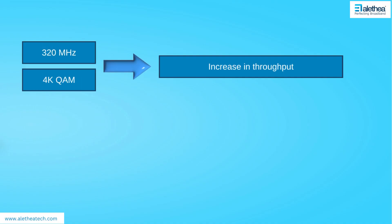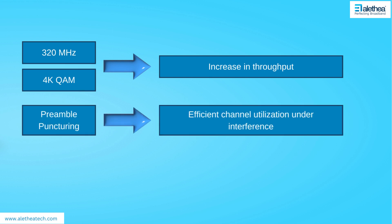Firstly, 320 MHz and 4K QAM give us an increase in throughput. Then we have preamble puncturing, which improves channel utilization in the presence of interference or heavy network usage in the neighborhood.